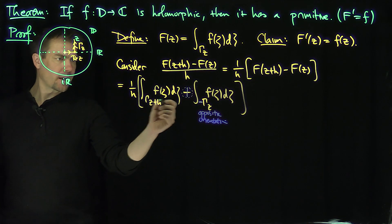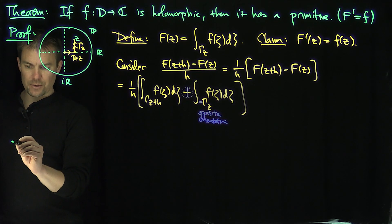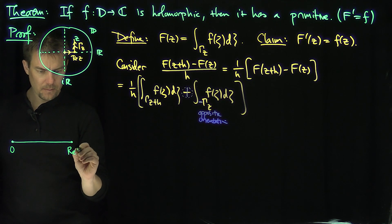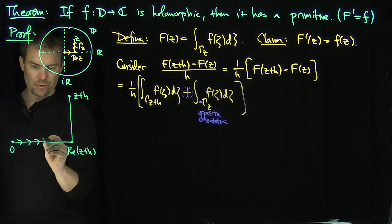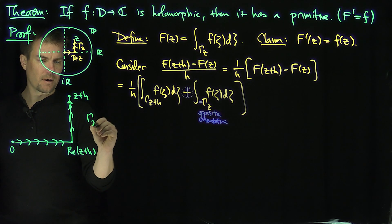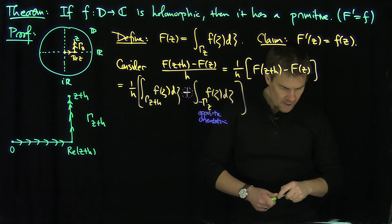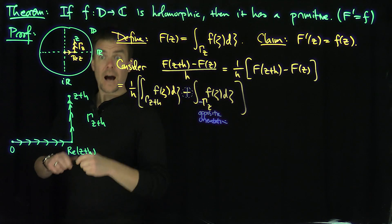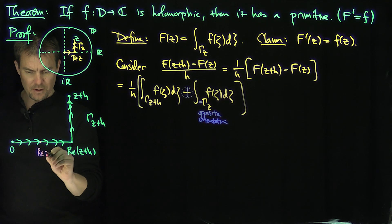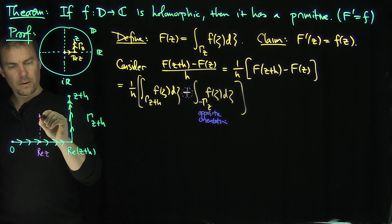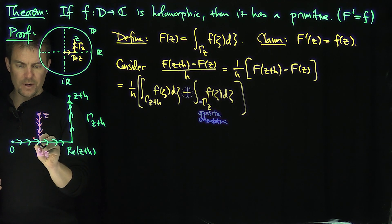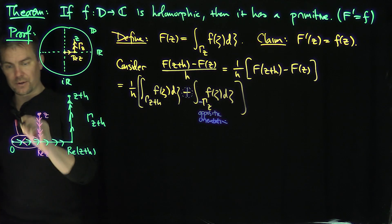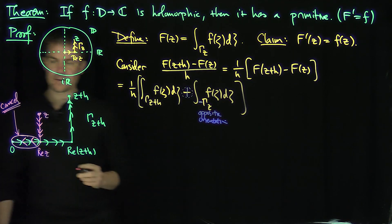So here's our configuration. Gamma of Z plus H goes from zero up to the real part of Z plus H, and then up to Z plus H. Now I draw the curve corresponding to gamma of Z in the opposite orientation: that's the real part of Z and then up to Z itself, but oppositely oriented. Since I've oppositely oriented this portion, it entirely cancels out the overlapping segment — this part cancels from our integral because of the opposite orientations.